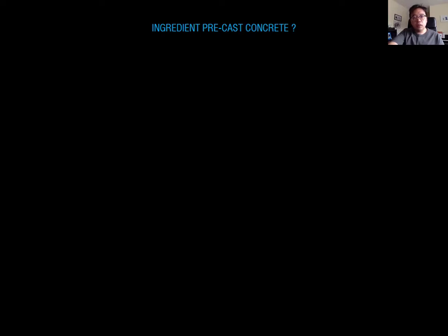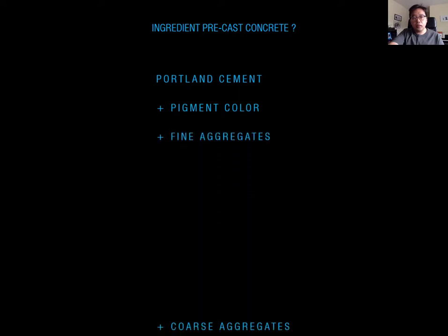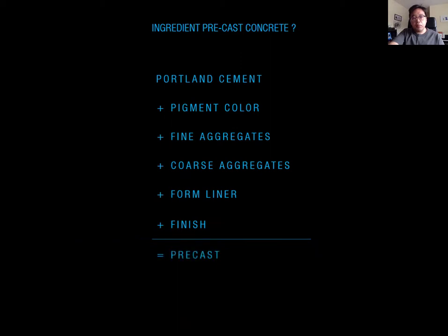Now let's talk about the basic ingredients of precast concrete. The first ingredient is Portland cement — the main ingredient — and you can add pigment color to get any color concrete. You need a fine aggregate, which generally consists of natural sand or crushed stone. Next is coarse aggregate, mostly gravel and crushed stone. You can also add a foam liner to create patterns, and then you can add any finish type. Depending on the combination of each component, you can produce your own custom concrete product.